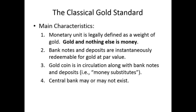In addition to bank notes and deposits, under genuine gold standards, gold coin is actually in circulation, as it was during the 19th century, the period of the classical gold standard. Under the classical gold standard, individual private banks could issue not only their own checking deposits, but also their own bank notes.